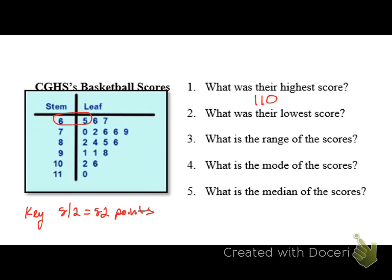What was their lowest score? You see right here. The 6 and that 5. So, not only are the stems placed in numerical order going vertical, the leaves are in numerical order going horizontal. So, that first 5 means that we've got a score of 65. The range is basically the difference from the highest to the lowest value. So, 110 minus 65 will give us 45. So, the range is 45 points.